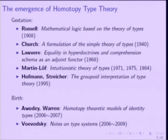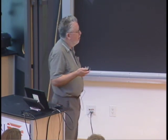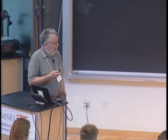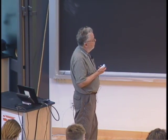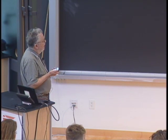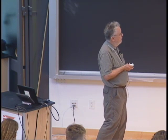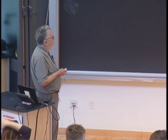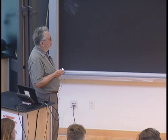Then Hofmann and Streicher found an interpretation. The funny thing about the language of type theory developed by Martin-Löf is there was no interpretation. Can you imagine that you have a formal language you could use for programming computers, but you don't know what it means? There were some rules that were extremely mysterious and there was no semantics for it. A semantics was found by Hofmann and Streicher, called the Groupoid Interpretation of Type Theory, in 1995.